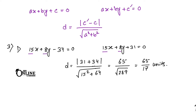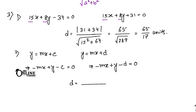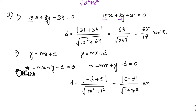For question 3(ii): lines are y = mx + c and y = mx + d. Rewrite as -mx + y - c = 0 and -mx + y - d = 0. Applying the distance formula: d = |-d - (-c)| / √(m² + 1) = |c - d| / √(1 + m²) units.